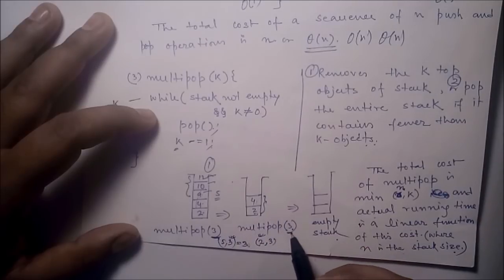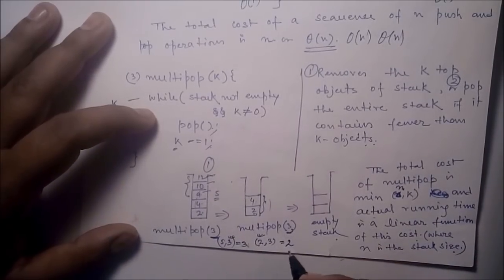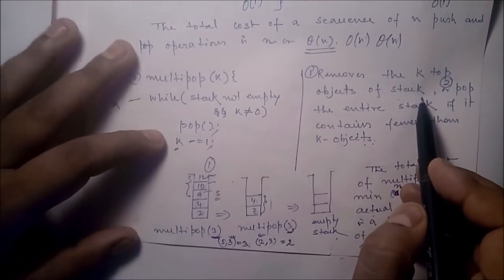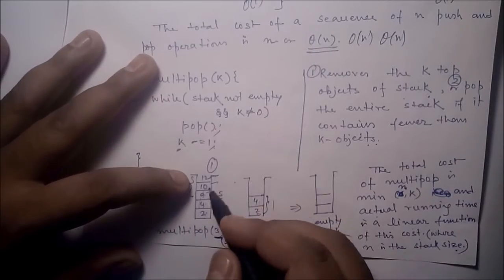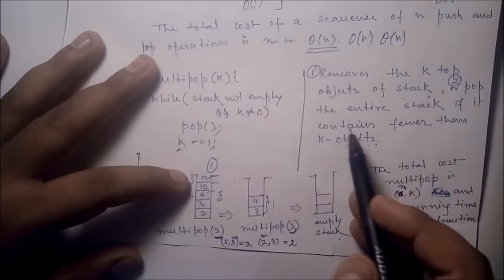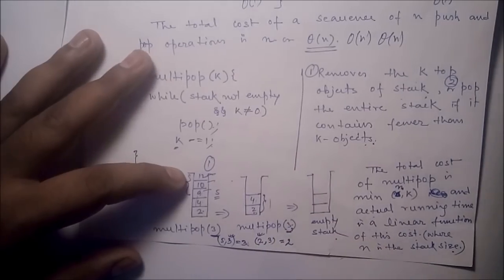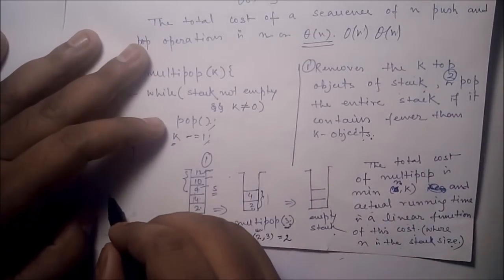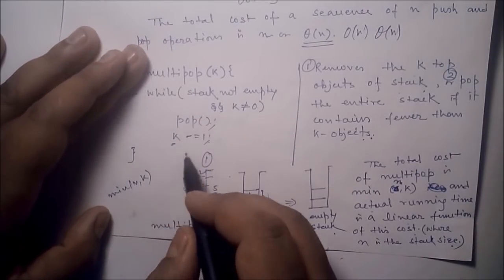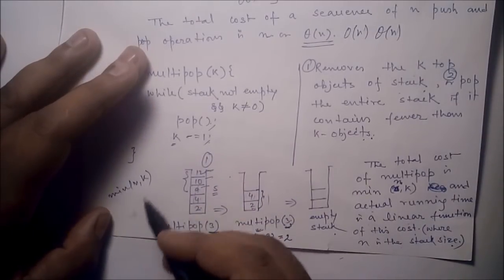If the k value is smaller than n, it will pop k data. But if n is smaller than k, it will pop n data. So the running time is linear — O(n) or O(k). For a sequence of n push, pop, and multi-pop operations, the worst-case cost of a single multi-pop is O(n). Therefore n such operations would be O(n²) — but this is correct, not tight.